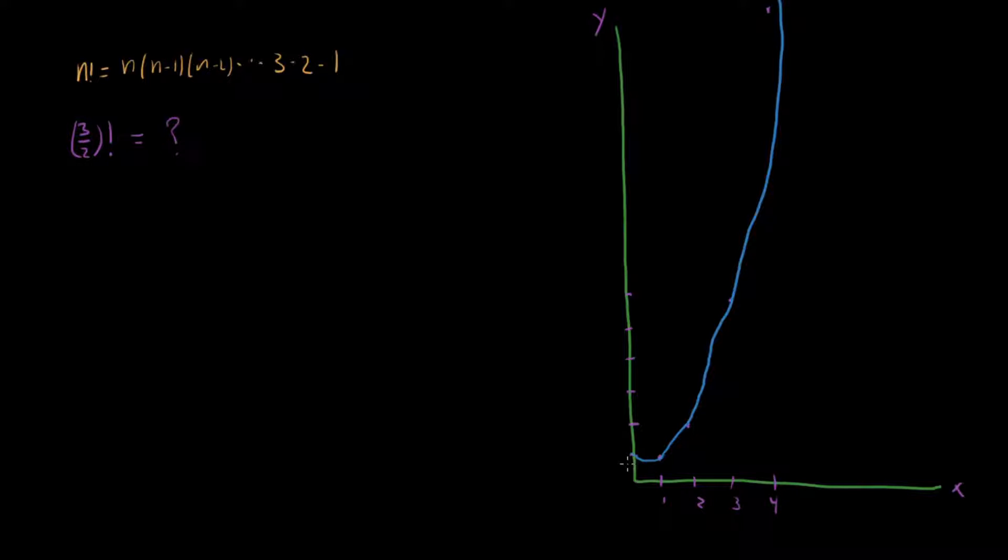But you might rightly complain that, wait a minute, there's more than one way to draw a curve through this. You could have just as well done something like this, maybe have something oscillate such that it still hits all the points. But it does some weird stuff in between those points. And you can even draw stuff weirder than this. So what stops us from drawing a curve like that?